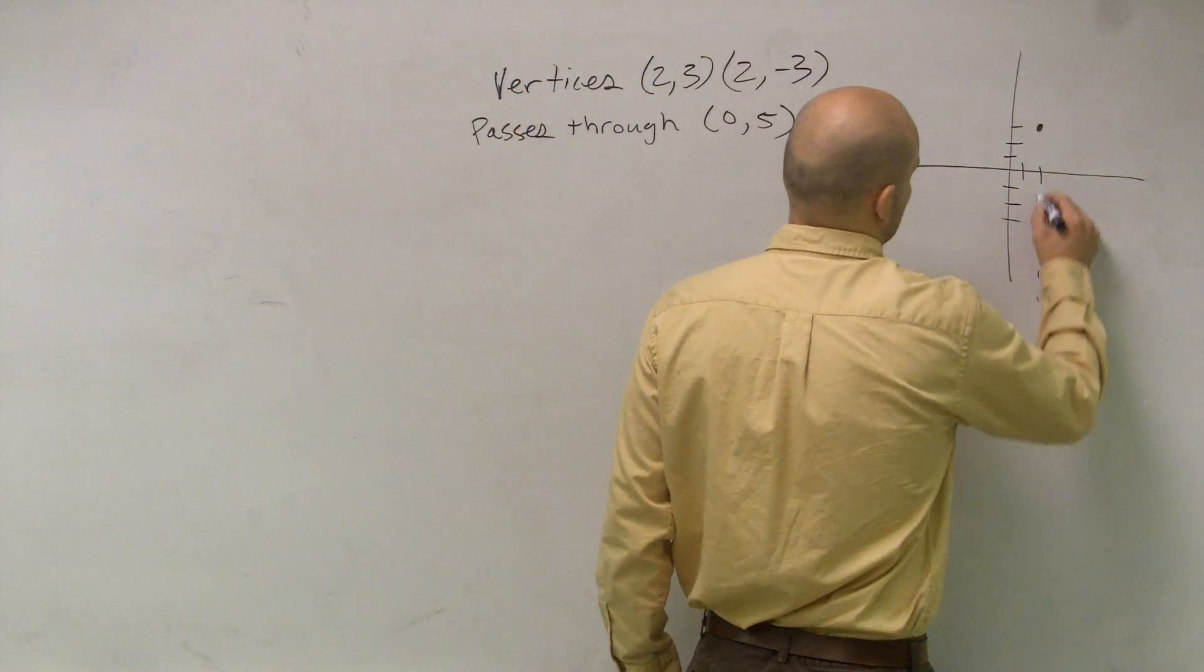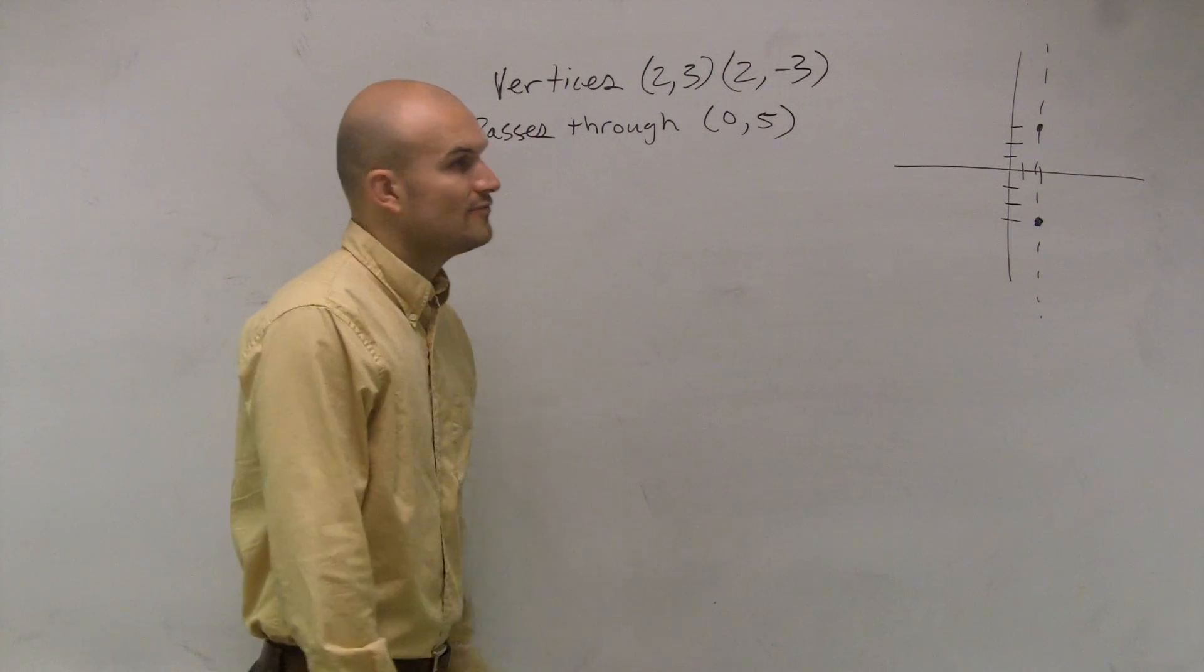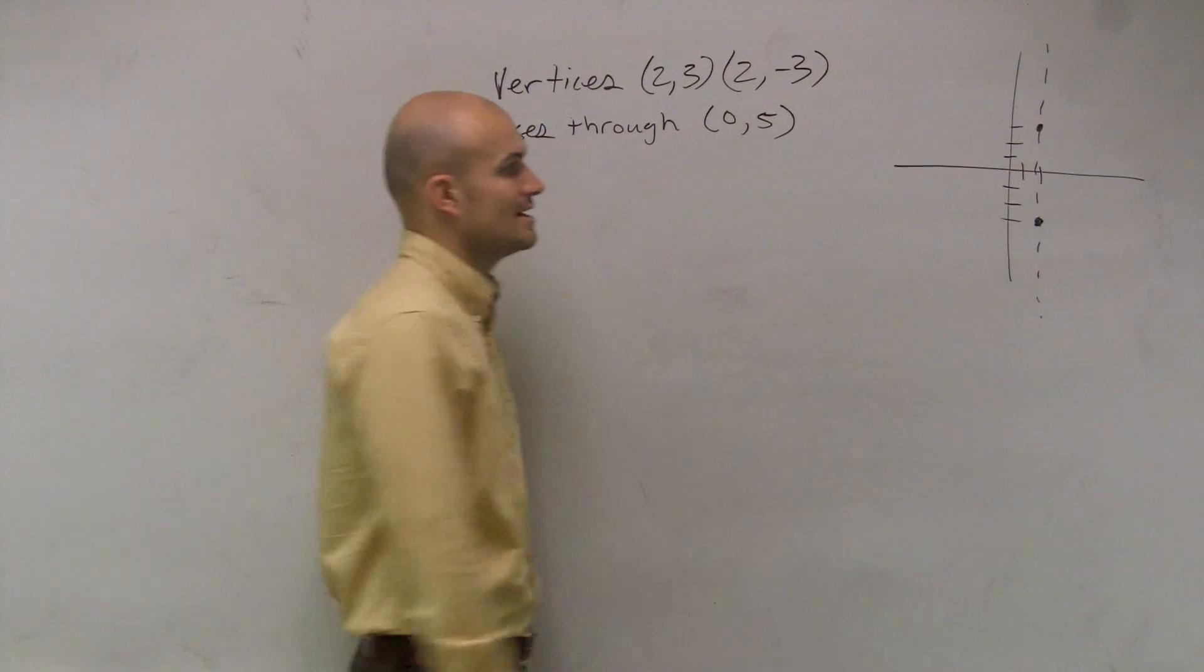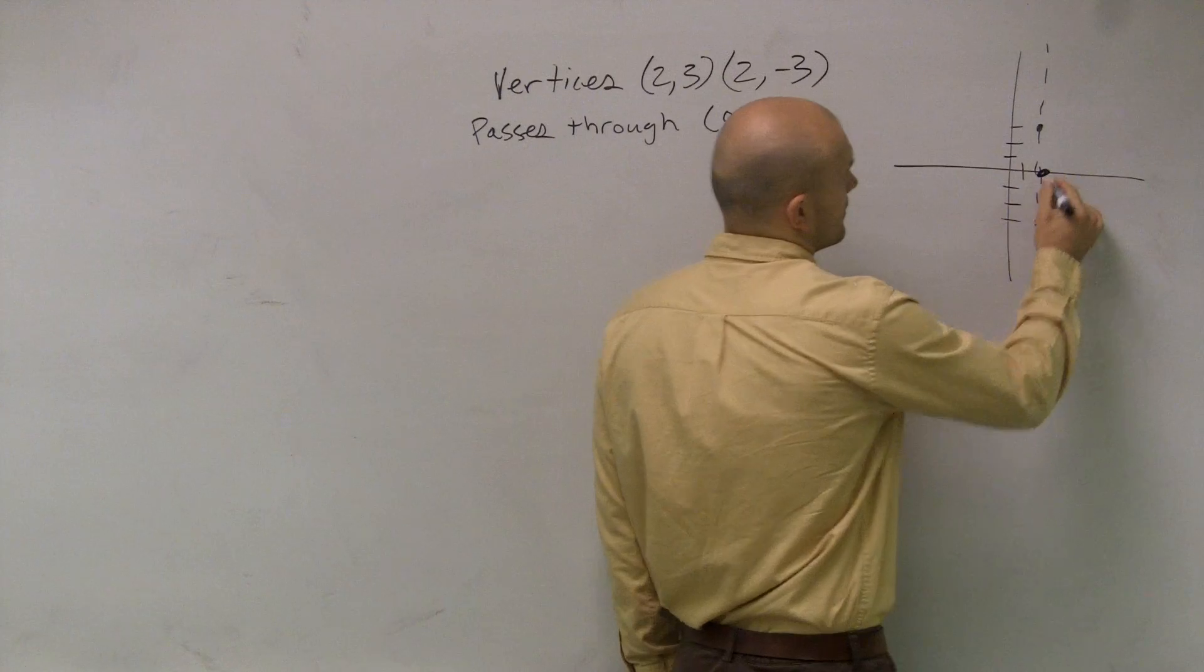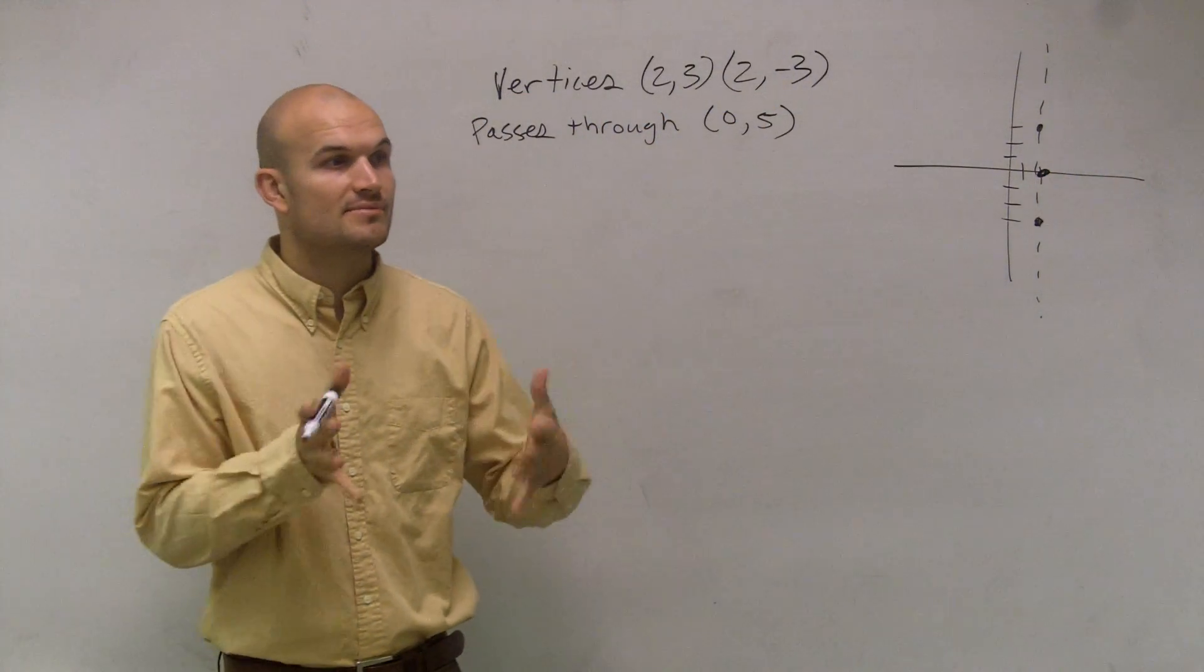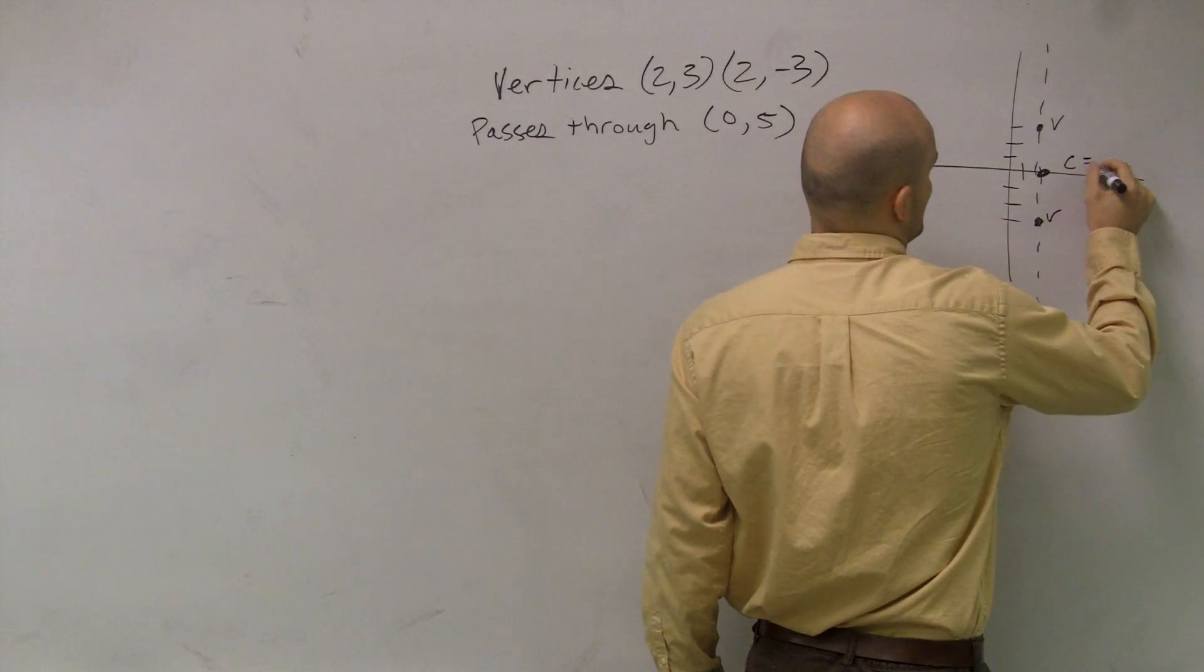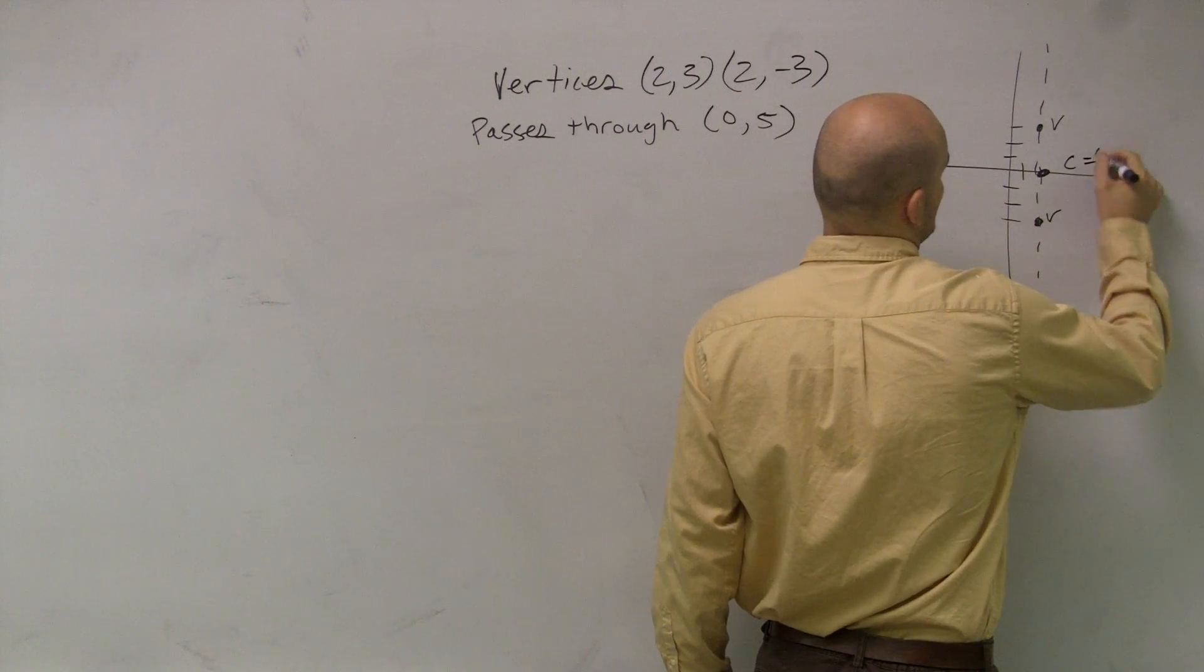So I'm going to have an axis of symmetry that's going to look something like this. Okay, so therefore I can also determine what the center is now. The center is now at (2,0), right? Because your center is in between your two vertices. So I can say here's a vertex, here's a vertex, center equals (2,0).